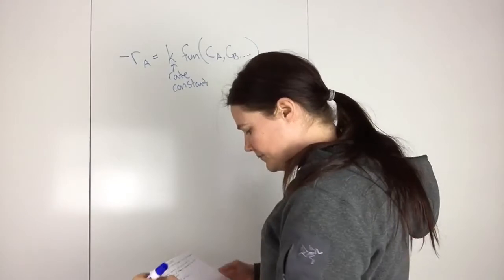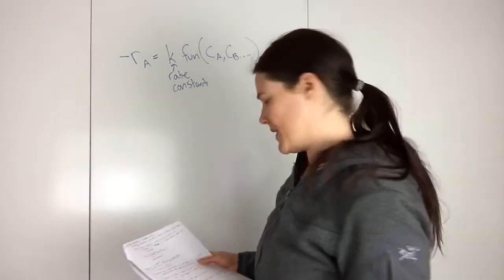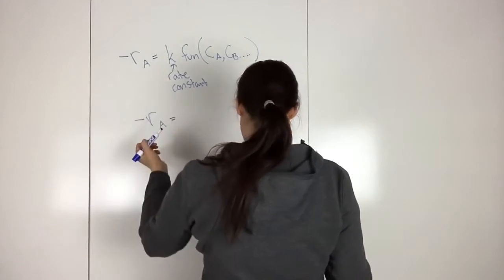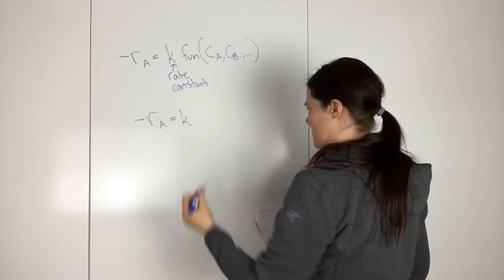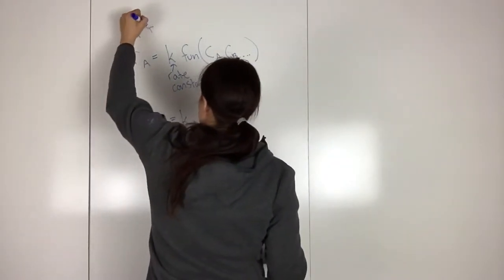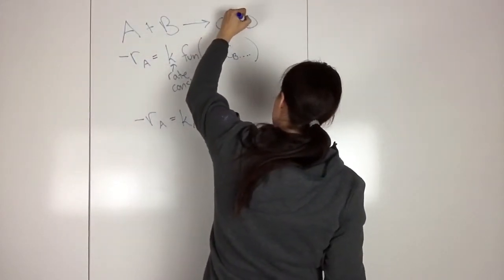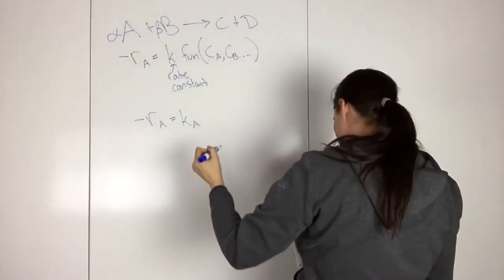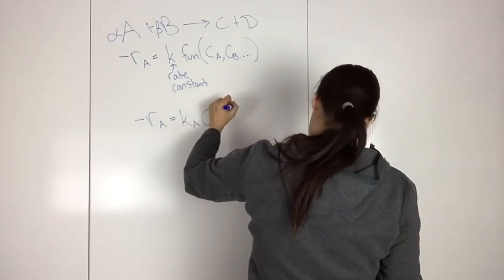And so for the power law models and the elementary rate laws, let's first of all assume that you have a reaction, that you've determined you have a rate law that looks like this. So say you have this reaction. And so you've determined that your rate law looks something like this.